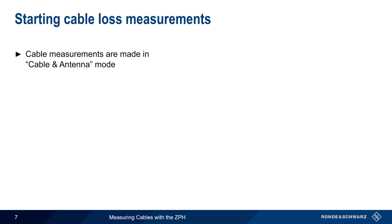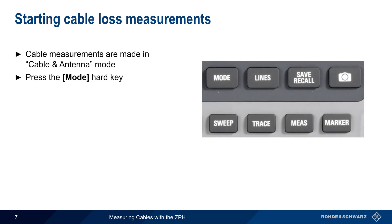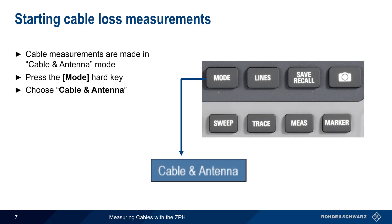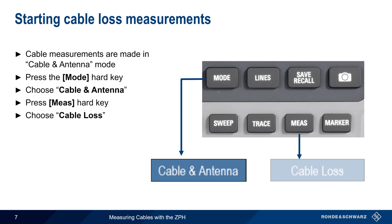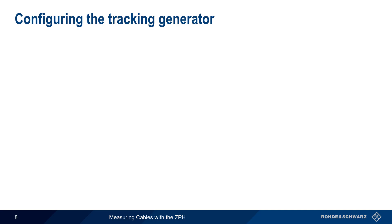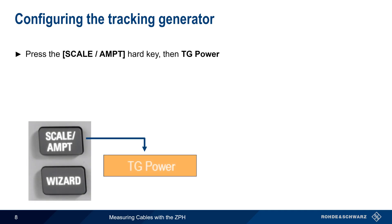On the ZPH, cable loss measurements are made in Cable & Antenna mode. To enter this mode, press the Mode Hard key on the front of the ZPH, and then choose Cable & Antenna from the list of available on-screen options. Next, press the Measure Hard key and select Cable Loss in order to configure and run one-port cable loss measurements.